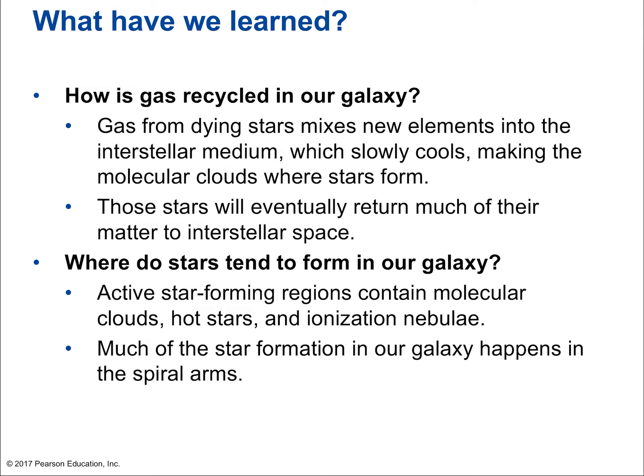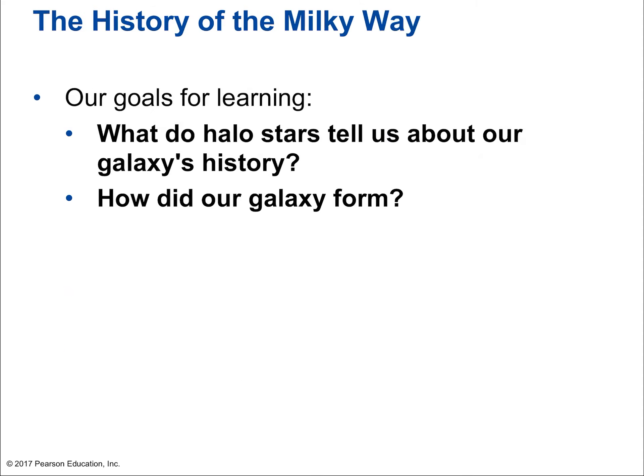In summary, how is gas recycled in our galaxy? Gas from dying stars mixes new elements into the interstellar medium, which slows cooling, making molecular clouds where stars form. Stars cannot form from very hot ionized clouds. Those stars will eventually return much of their matter to interstellar space via a planetary nebula or more dramatically via a supernova. Active star-forming regions contain molecular clouds, hot stars, and ionization nebulae, with much of the star formation in the spiral arms.